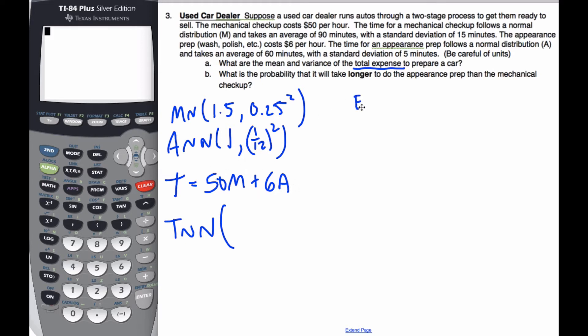I know the expected value of 50M plus 6A is simply going to be 50 times the expected value of M plus 6 times the expected value of A. Well, it's 50 times 1.5 plus 6 times the expected value of A.